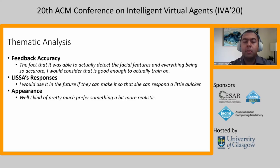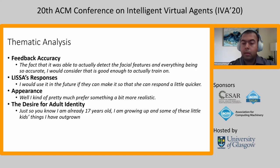The next theme is Lisa's appearance. We were initially unsure whether to use a cartoonish or a realistic looking virtual agent. However, most participants wanted to have a more realistic looking virtual agent. One said: 'I kind of pretty much prefer something a little more realistic.' The last theme is the desire for adult identity. Most participants wanted to be treated like an adult. One participant became very frustrated and said: 'Just so you know, I am already 17 years old. I'm growing up and some of these little kids things I have outgrown.'